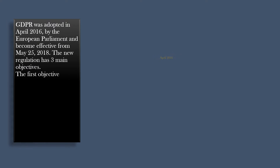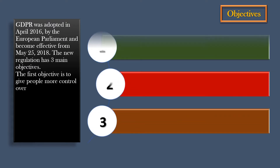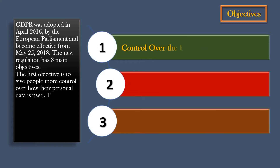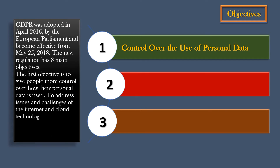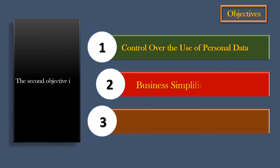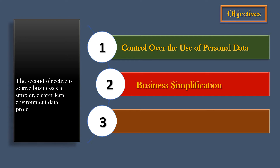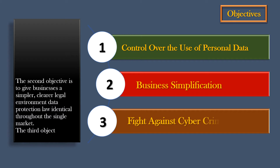The new regulation has three main objectives. The first objective is to give people more control over how their personal data is used. To address issues and challenges of the internet and cloud technology, GDPR tends to improve trust in the emerging digital economy. The second objective is to give businesses a simpler, clearer legal environment in data protection law, identical throughout the single market. The third objective is to fight cybercriminality.